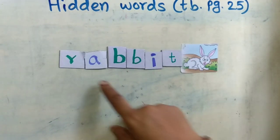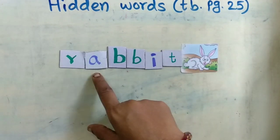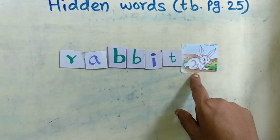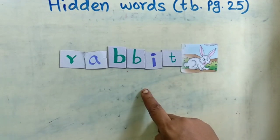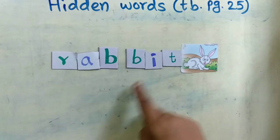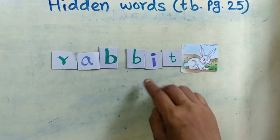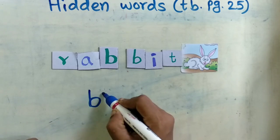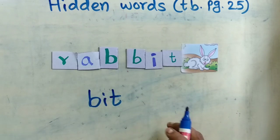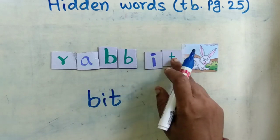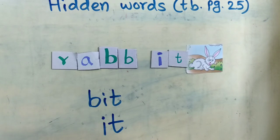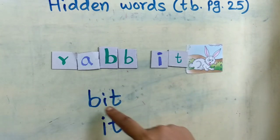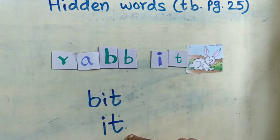Children, here is another word: R-A-B-B-I-T, rabbit. Rabbit is a shy animal. Now in this spelling, which words are hidden? Find out. See, I split the word here, then we got B-I-T, bit. Bit is a word. And again if I break this word, I got I-T, it. So in rabbit, I got B-I-T, bit, and I-T, it.